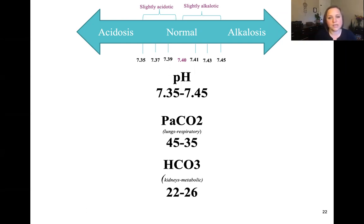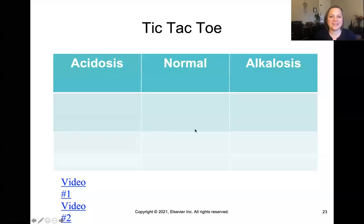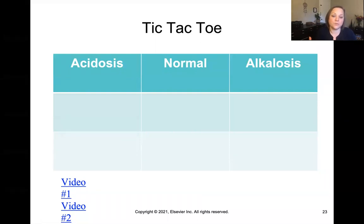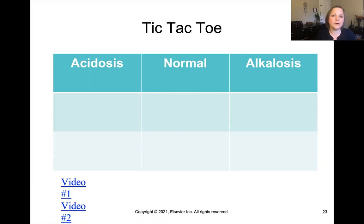Write this out as a chart for yourself before you proceed to the next slide. The best way to interpret blood gases is through the tic-tac-toe method. When you get three in a row, it really helps you understand if it's respiratory, if it's alkalotic, if it's metabolic — whatever it is. It helps you quickly interpret the blood gas and understand if there's any compensation. I'm going to link two videos below that concisely explain this tic-tac-toe method, so please pause here, don't skip this part, and go learn how to use the tic-tac-toe method for blood gas interpretation.